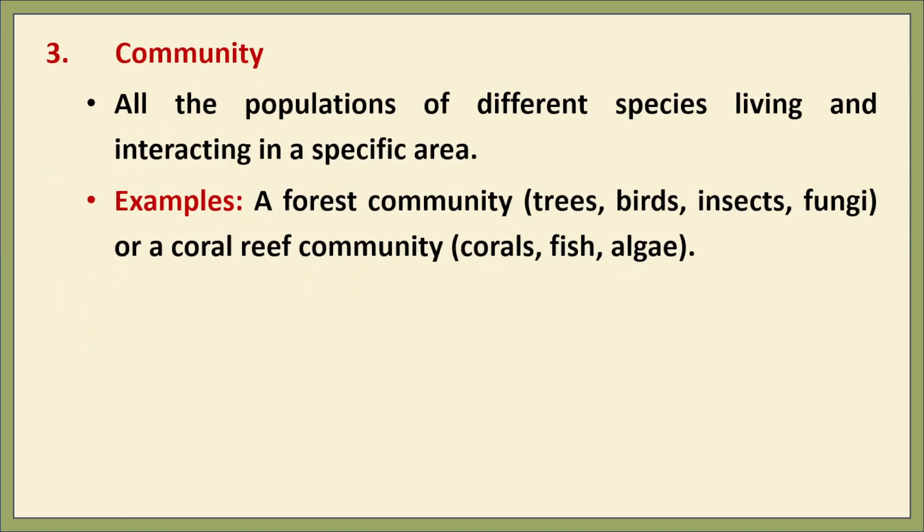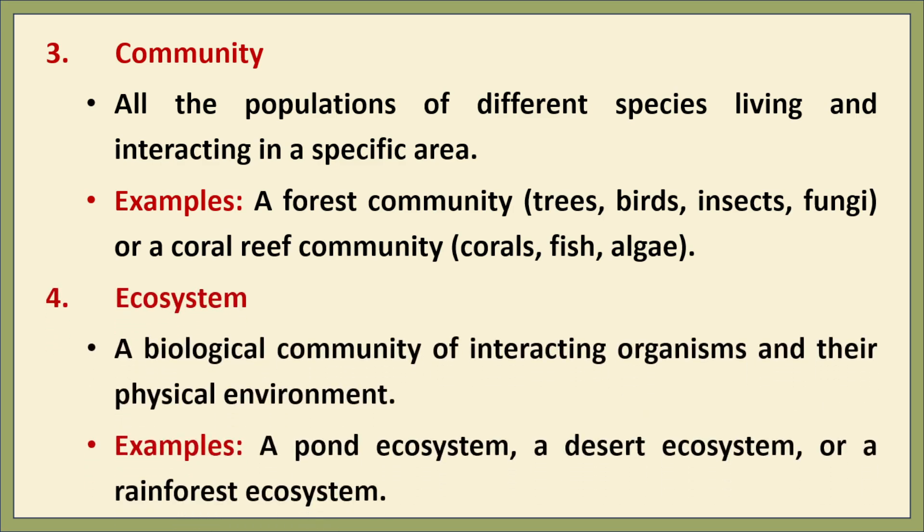The third level is community — consisting of multiple populations of different species living and interacting in the same area. Examples include a forest community with trees, birds, insects, and fungi, or a coral reef community where corals, fish, and algae coexist. At this level we study how species interact through competition, predation, or symbiosis.